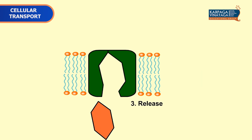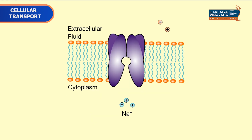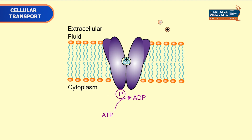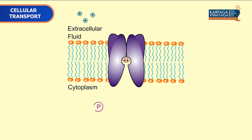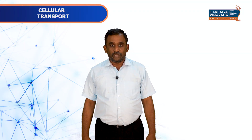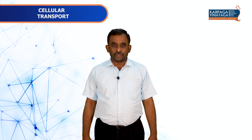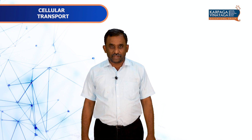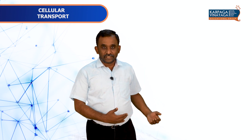Active transport is the movement of a molecule from lower concentration to higher concentration with the aid of a transporter, utilizing ATP. It mainly includes the sodium-potassium ATPase pump. This covers the various types of cellular transport mechanisms.